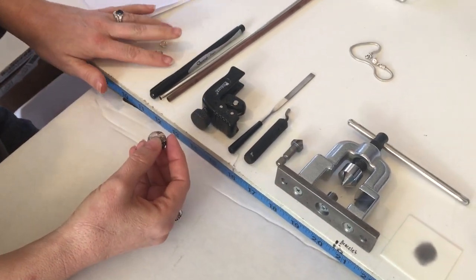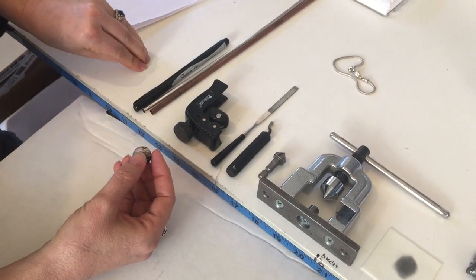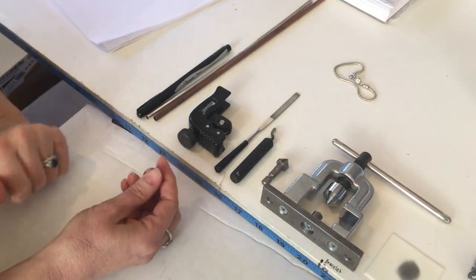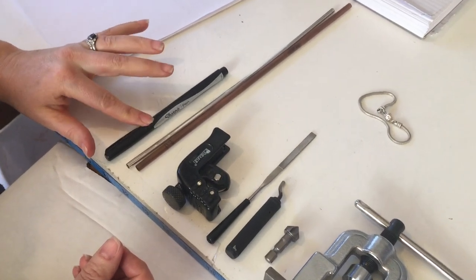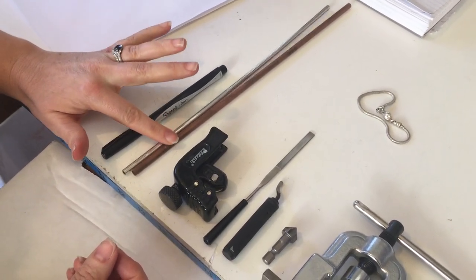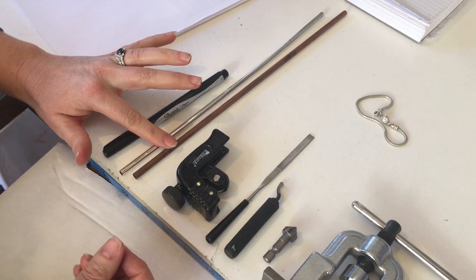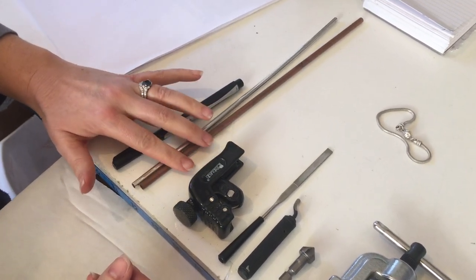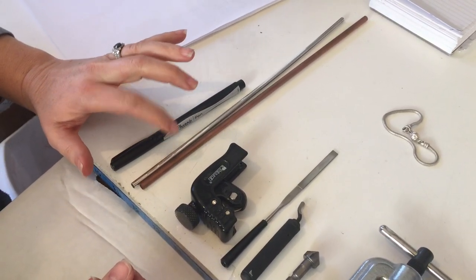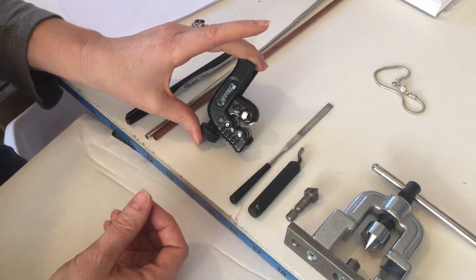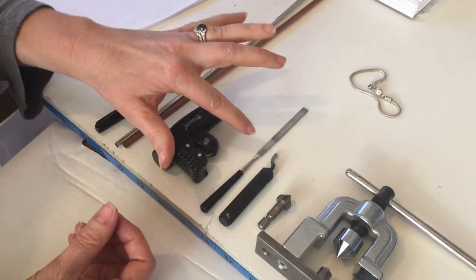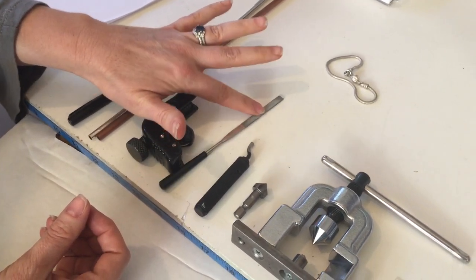So some of the tools that we use: a Sharpie permanent marker with a fine tip. These are two different examples of the tubing that we use. This is copper, that one is silver. This one is to cut the tubing. A diamond file.